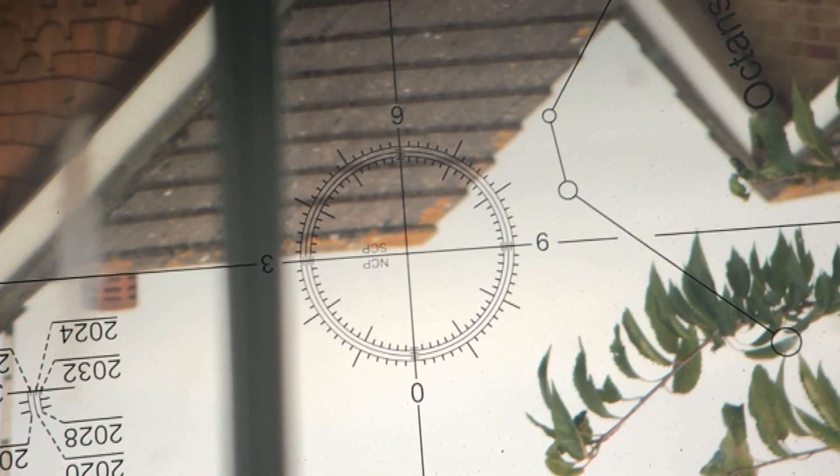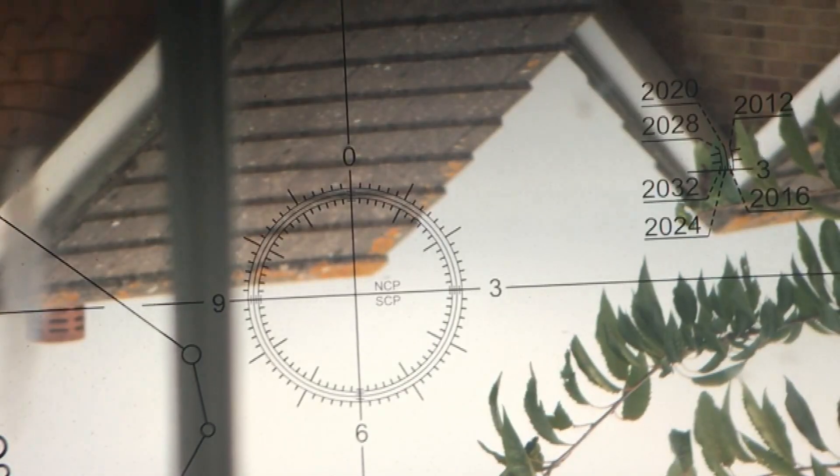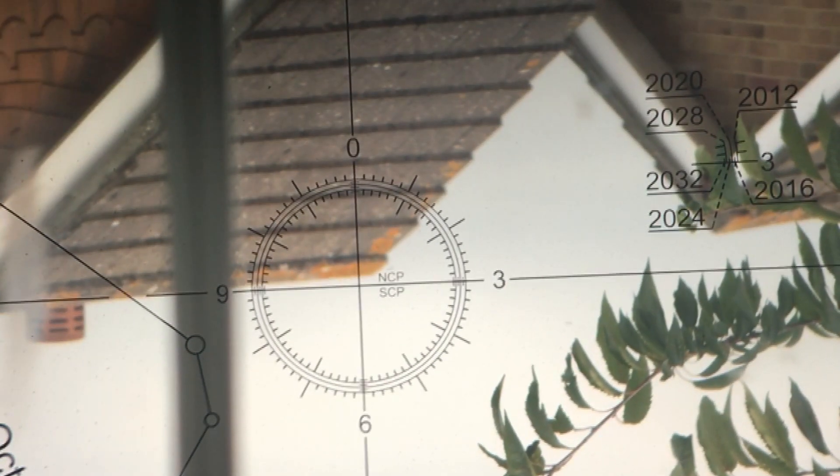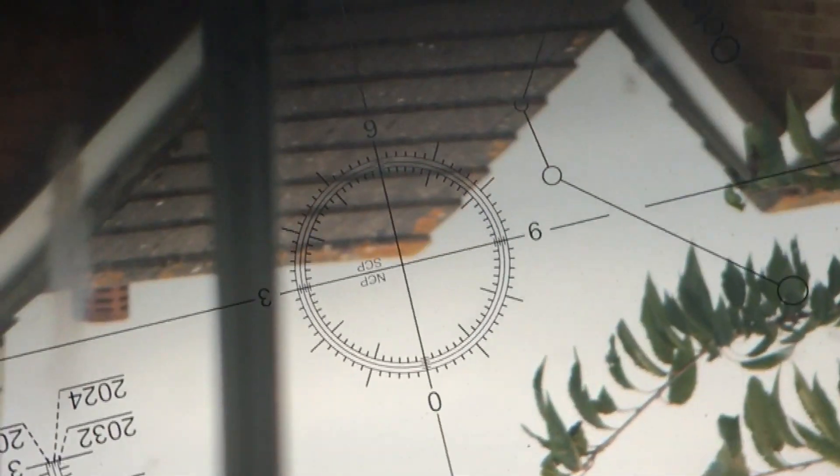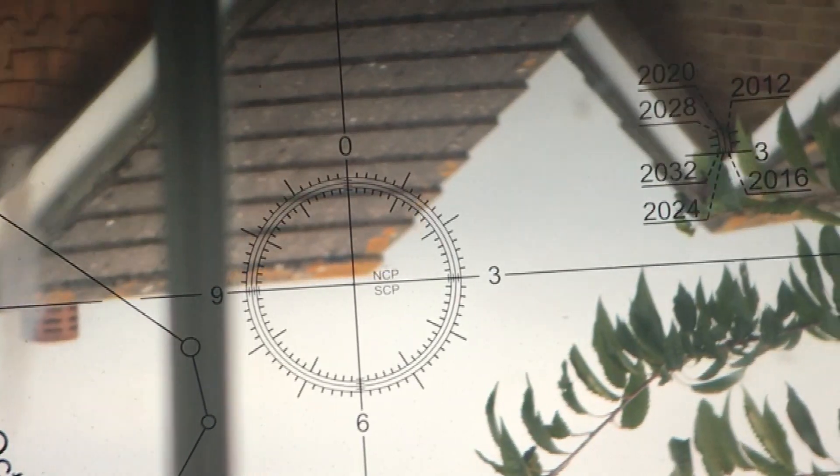You see here I'm making little adjustments to the graticule position and then testing again to see whether I'm closer or further away. It's very easy to make the correction in the wrong direction, but that just teaches you which way you need to go to get it right.